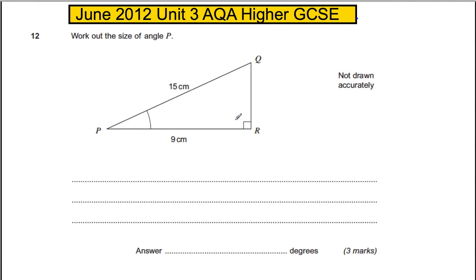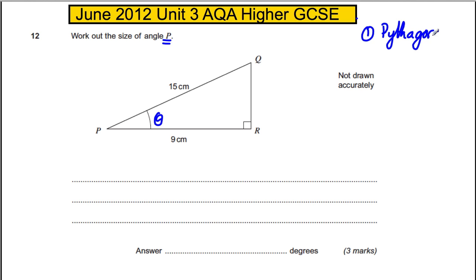We're given a question about a right angle triangle and it asks for the angle P — I'm going to call that theta. Now we've got a right angle triangle, so you should be thinking it's either Pythagoras or it's SOH-CAH-TOA trigonometry.